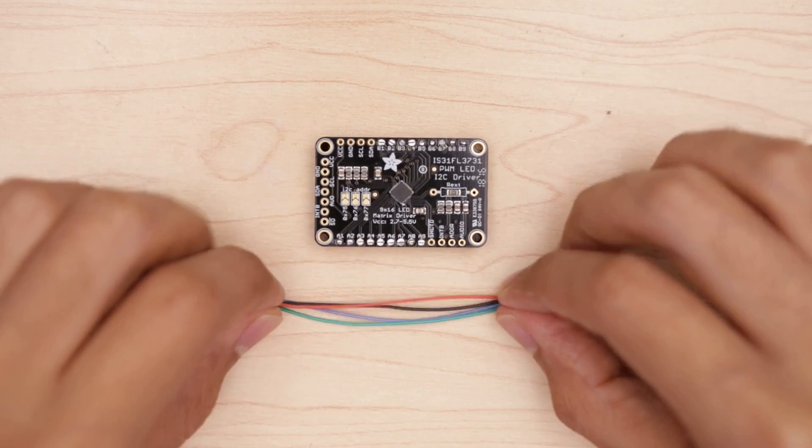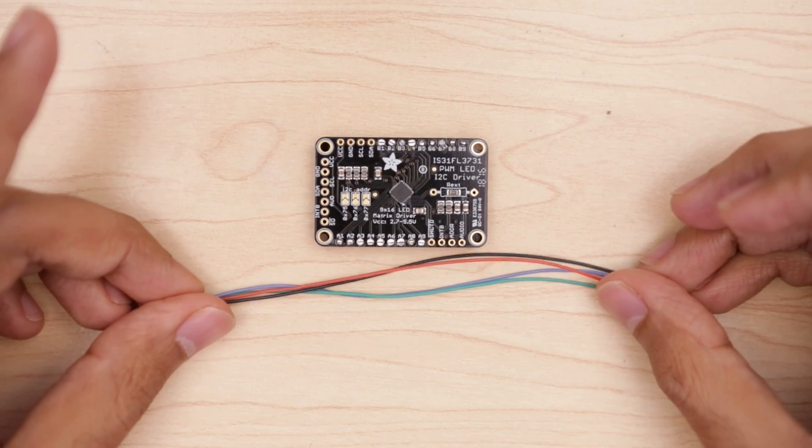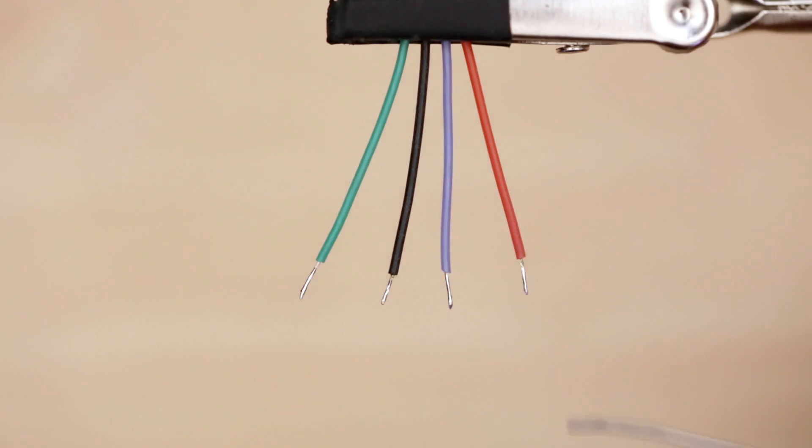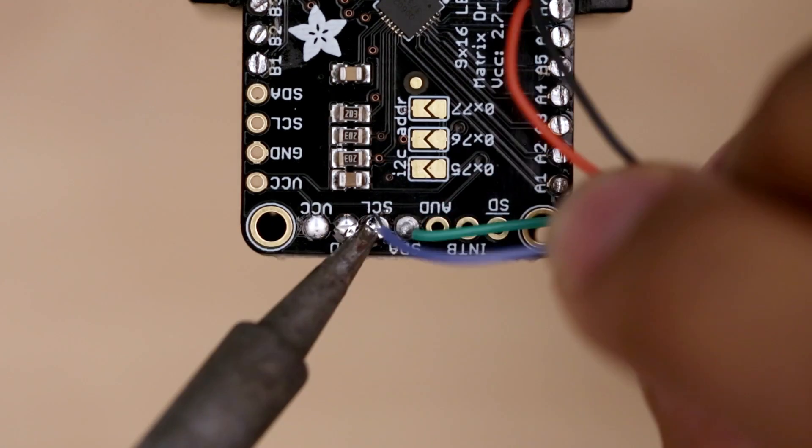Next we'll need four pieces of wire to connect the LED matrix and driver to the Adafruit Feather. Strip and tin the tips of each wire and solder them to the four pins on the side of the LED driver.